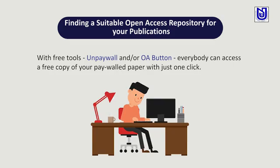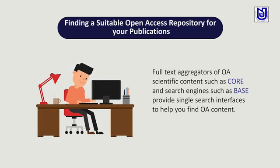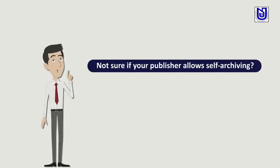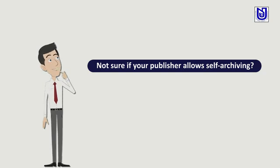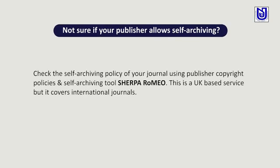We have another free tool like the on-paywall OA button, so everybody can access a free copy of your paywall paper with just one click. We may also use scientific aggregators like CORE or BASE, which provide a single search interface to find open access content. If you are not sure where to publish your research paper or whether your publisher allows self-archiving, then check the self-archiving policy of your journal using publisher copyright policies and self-archiving tools like Sherpa Romeo. It is a UK-based service that covers a good number of international journals.